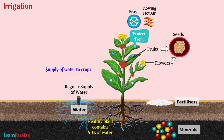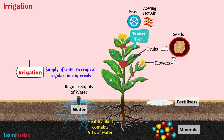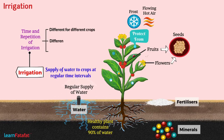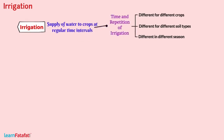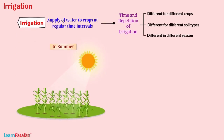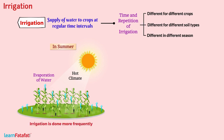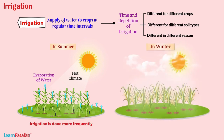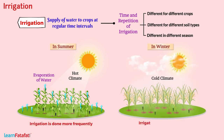A healthy plant requires a regular supply of water. The supply of water to crops at regular intervals is called irrigation. The time and frequency of irrigation differs for different crops, different soil types, and different seasons. For example, in summer, due to hot climate, evaporation through plant leaves and soil is higher, so irrigation is done more frequently. In winter, due to cold climate, irrigation is not so frequent.